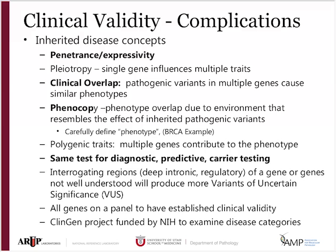We don't routinely look at deep intronic or regulatory variants because most of the time we don't know how to interpret them. We try to limit ourselves to regions of the gene where we have a good chance of interpreting results. If there are publications saying a mutation has been identified in a gene in a person with symptoms, that alone isn't establishing clinical validity for that gene — more studies need to be done. When we design a panel, we are very careful to ensure that all genes independently have established clinical validity.